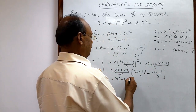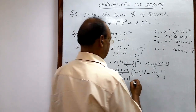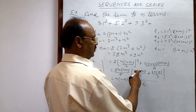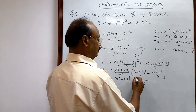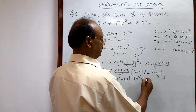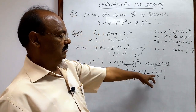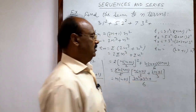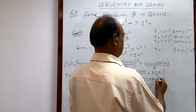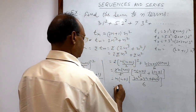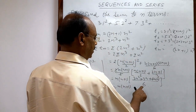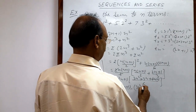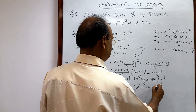The 2 cancels, leaving n into n plus 1. Taking LCM of 2 and 3, which is 6: multiplying the first part by 3 gives 3n squared plus 3n, and multiplying the second part by 2 gives 2n plus 1 times... combining numerator terms gives 3n squared plus 7n plus 2, all over 6, outside the n into n plus 1 factor.